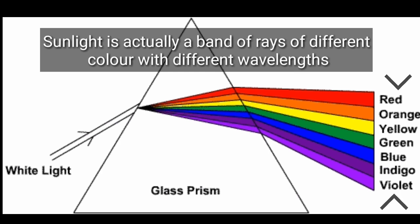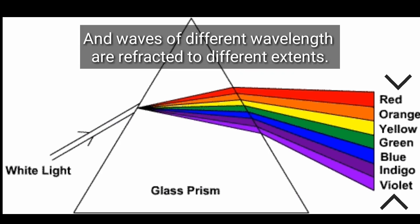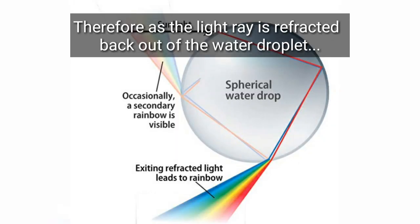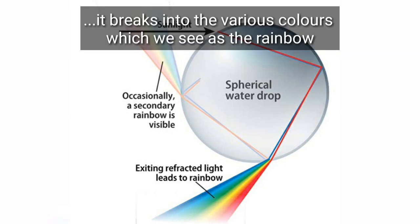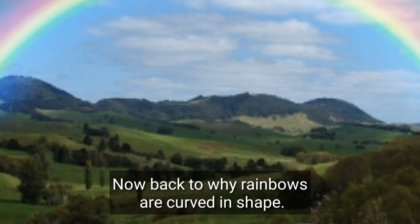Sunlight is actually a band of rays of different colors with different wavelengths, and waves of different wavelengths are refracted to different extents. Therefore, as the light ray is refracted backward out of the water droplets, it breaks into the various colors which we see as the rainbow. Now back to why rainbows are curved in shape.